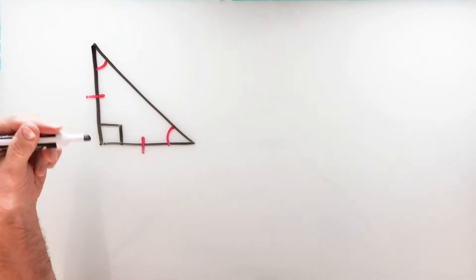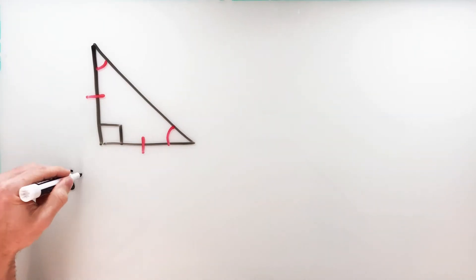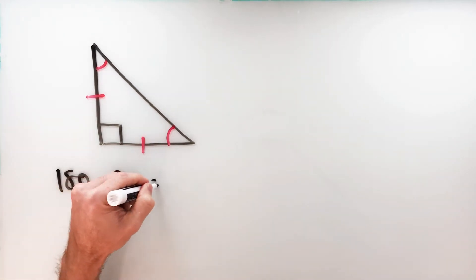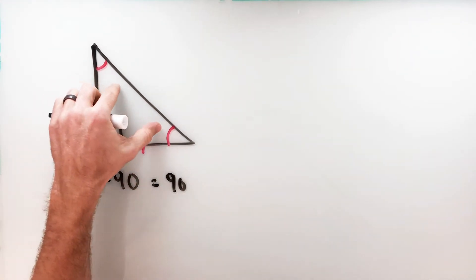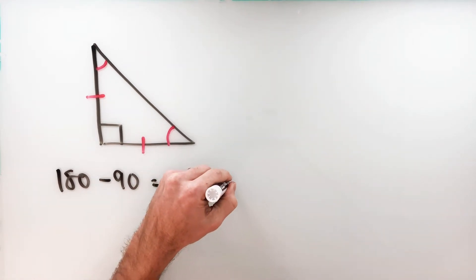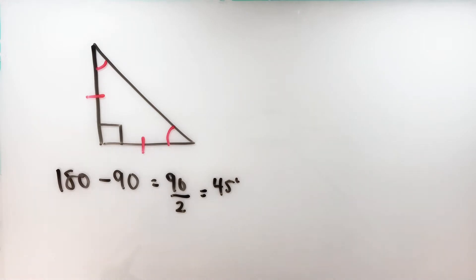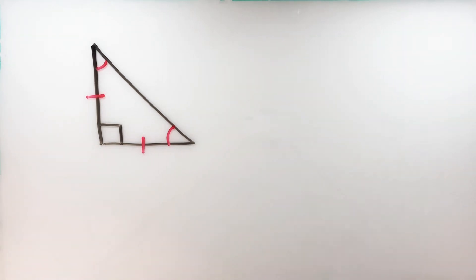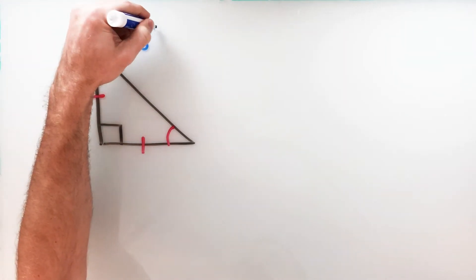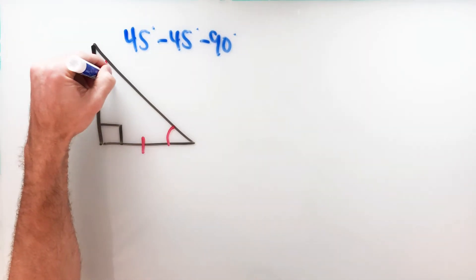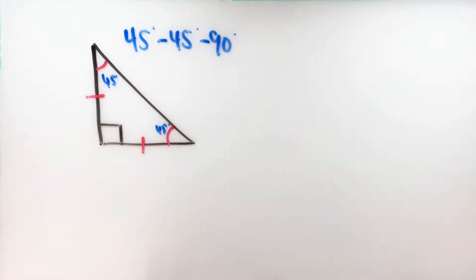Since we know this is a right triangle, every triangle has a total sum of 180 degrees. We've already got a 90-degree angle, so what's left is 90 degrees — 180 minus 90 is 90. And since we've got these two angles congruent to one another, all I have to do is divide by two, and that shows us that these two angles are going to be 45 degrees each. That's why we call this the 45-45-90 right triangle, with 45 here, 45 here, and of course 90 degrees.